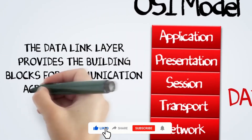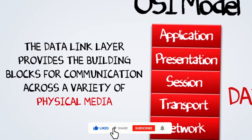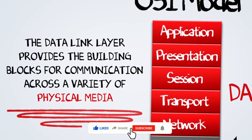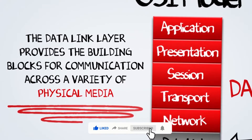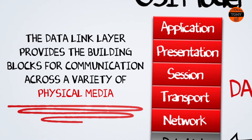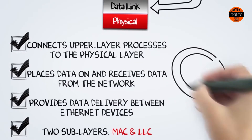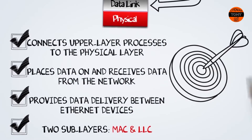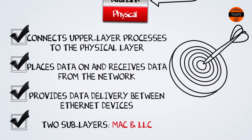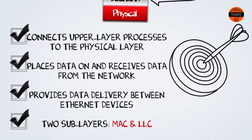The data link layer provides the building blocks for communication across a variety of physical media. When we refer to the Ethernet standard, we are primarily looking at communications between two network interface, or NIC, cards on each computer. The data link layer resides in between the network layer above and the physical layer below, and it connects upper layer processes to the physical layer.